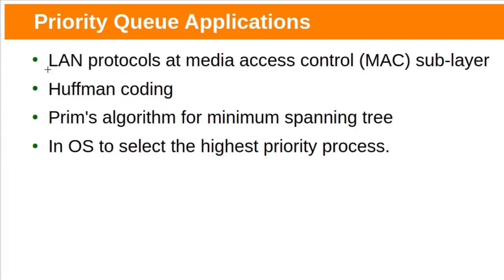Let's see the applications of priority queue. Many modern protocols for LANs use priority queues at the MAC sublayer to ensure high priority applications such as IPTV and Voice over IP experience lower latency than other applications. Huffman coding requires repeatedly obtaining two lowest frequency trees, and priority queues are one method of doing that. Using a min-heap priority queue, Prim's algorithm to find the minimal spanning tree of a graph can achieve good running time. Priority queues are also used in operating systems to select the highest priority process.